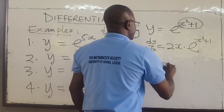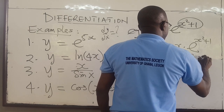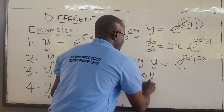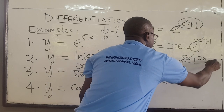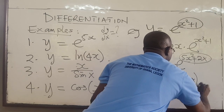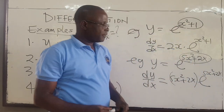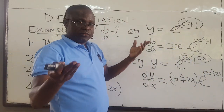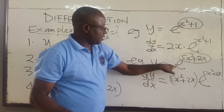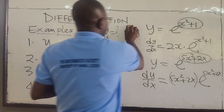If y equals e raised to the power 5x squared plus 2x, you do the same thing using the chain rule. dy/dx will be the derivative of the exponent — which is 10x plus 2 — multiplied by the whole function e to the 5x squared plus 2x. Try that using the chain rule. That is the rule whenever you have exponential functions.